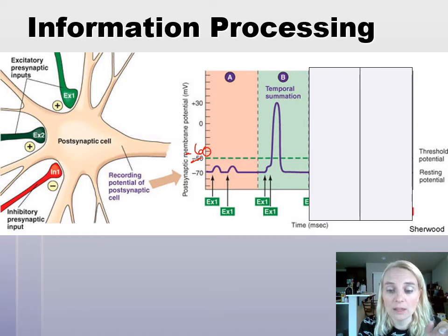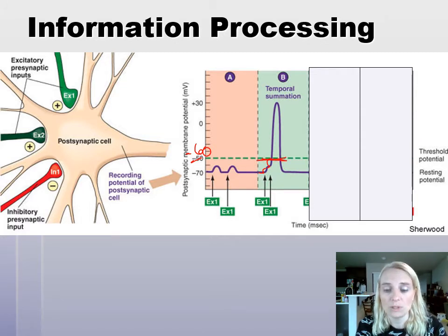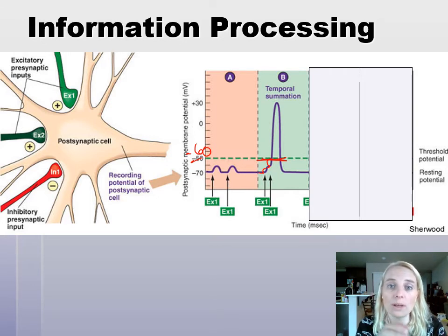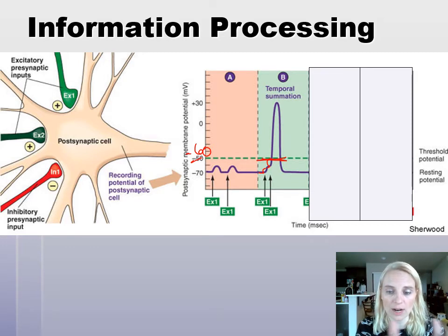But what if they both fire one right after the other? That's our temporal summation. Here's the first one, and then here's the second one — and that gets us to threshold, so we get an action potential. This is temporal summation: the same synapse, like that double-click analogy — back to back — and you get your action potential.